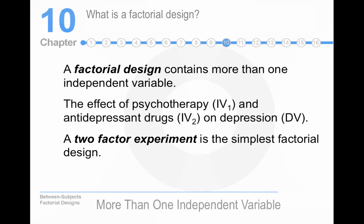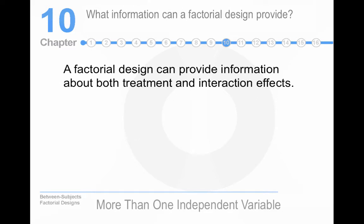Because they're more like real life, factorial designs are higher in external validity than single independent variable designs. And as it says on the slide, a two-factor experiment, meaning two independent variables, is the simplest type of factorial design. So what kind of information can a factorial design provide about both treatment and interaction effects? That's one of the reasons why we like them. We can see how two variables interact with each other.